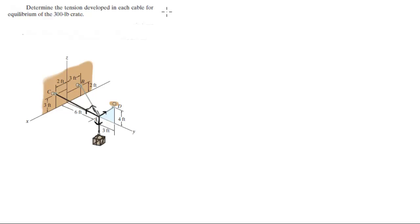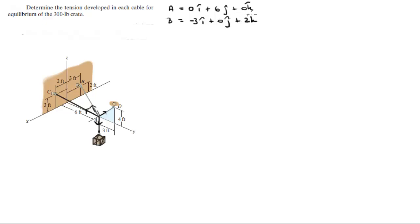To find the unit vectors, first you want to find all the points involved. A sits at (0i + 6j + 0k). B sits at (-3i + 0j + 2k). C sits at (2i + 0j + 3k). And D sits at (0i + 9j + 4k).